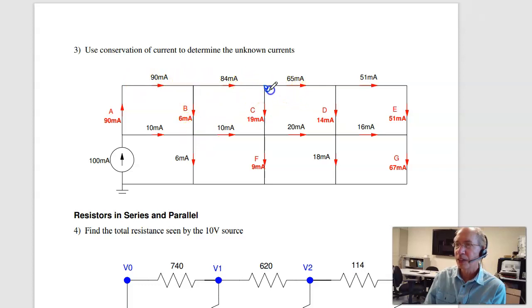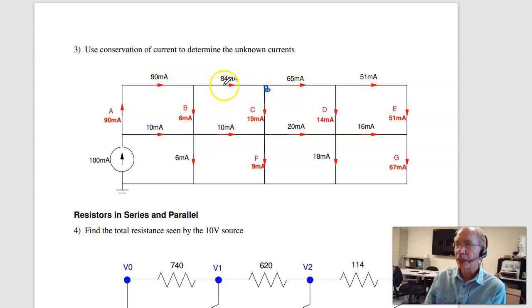Right here, 84 in, it's got to be 84 out. So 84 is 19 plus 65. At this point, current in equals current out. 65 is 14 plus 51. Current in equals current out. 51 equals 51. 16 plus 51 equals 67. At this point, 10 plus 19 is 20 plus 9. And so on. Current in equals current out. That's problem three.